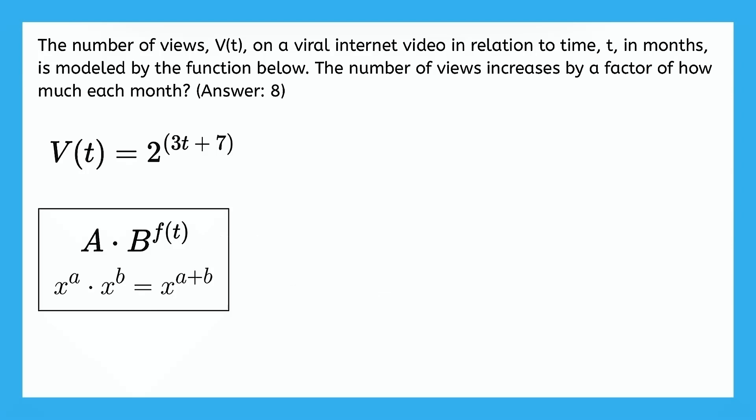So this question says, the number of views V(t) on a viral internet video in relation to time t in months is modeled by the function below. The number of views increases by a factor of how much each month? And the answer that we should get is 8. So let's see how we can get to that answer.